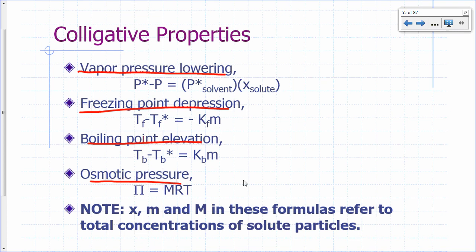The constants that depend on the nature of the solvent are: for vapor pressure lowering, P-star solvent; for freezing point depression, K sub F; for boiling point elevation, K sub B; and for osmotic pressure, RT. In the case of osmotic pressure, R is just a universal constant and T is the temperature.